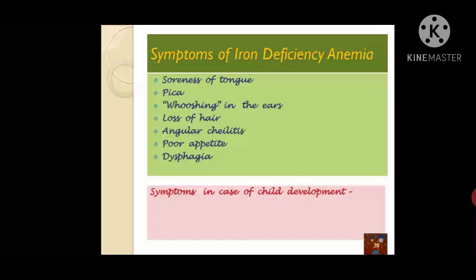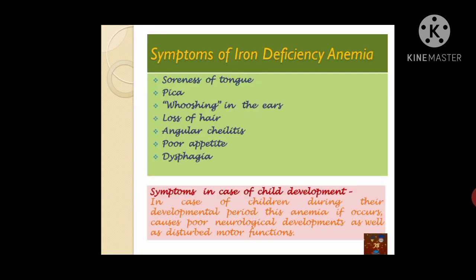Now let's look at symptoms in the case of children. So far we have discussed adults, but if a child is suffering from iron deficiency anemia during their developmental period, this can result in poor neurological development as well as disturbed motor function. Neurological development requires a large amount of oxygen and nutrients — both of which are deficient here, along with iron. Motor functions such as movement of the legs and hands become very weak and fatigued.